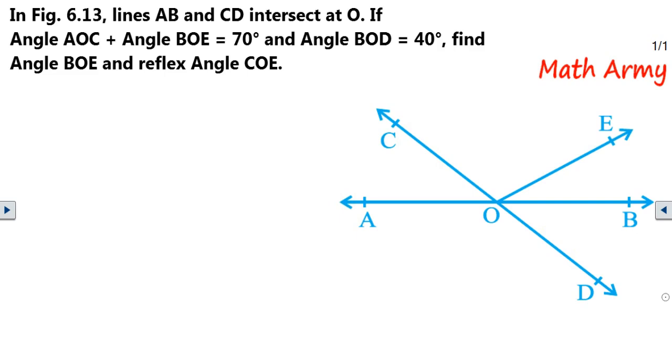Hi guys, welcome to my channel MathArmy. In the given figure, lines AB and CD intersect at O. If angle AOC plus angle BOE is equal to 70 degrees and angle BOD is 40 degrees, find angle BOE and reflex angle COE.